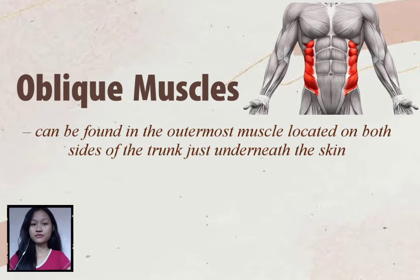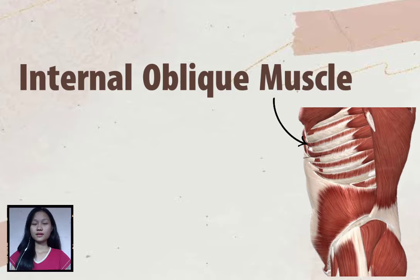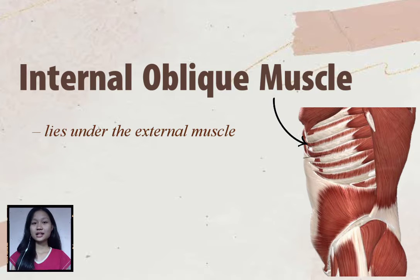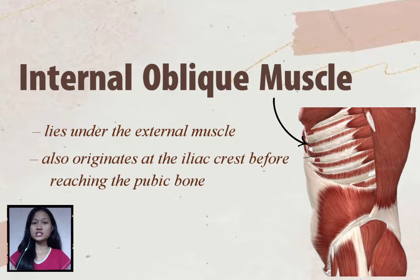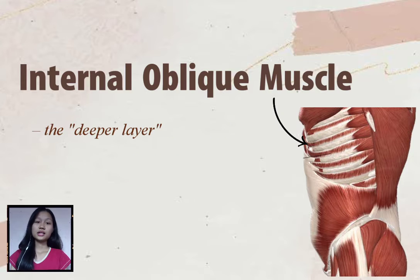They can be found in the outermost muscle located on both sides of the trunk, just underneath the skin. The internal oblique muscle lies under the external muscle and also originates at the iliac crest before reaching the pubic bone. It is the deeper layer.